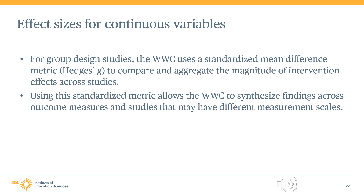Hedges G can be conceptualized as roughly equivalent to the Cohen's D effect size, which is likely familiar to many researchers, and again represents the average difference between an intervention and comparison condition in a standardized way. Because the effect size provides a common standardized scale for measuring impacts, it can be used to compare findings across different outcome measures, and allows the WWC to aggregate impacts across outcomes and studies in order to summarize evidence.